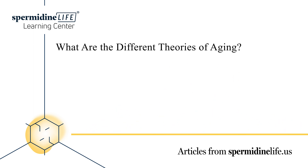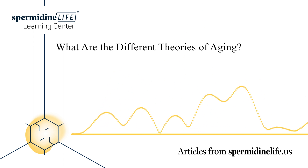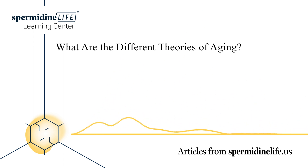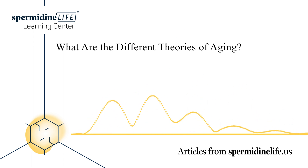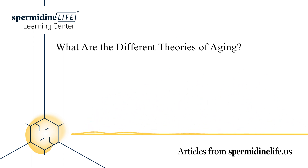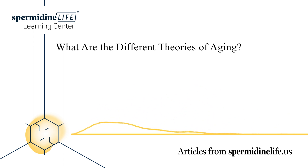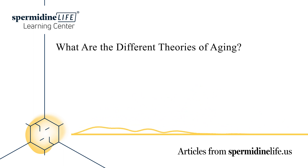And number four, group selection theory, also called the kin selection theory. This concept suggests that death and aging are a part of maintaining the group's well-being and longevity. The death of the elderly creates more resources and opportunities for the young, which ensures the species' survival.